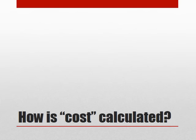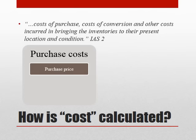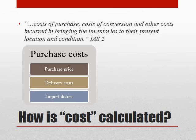Cost is more straightforward and something you'll be much more familiar with. It's the cost of getting that item of stock to its current location and condition. So it's going to include purchase costs — things such as the purchase price itself net of any discounts. We'll also add on the delivery costs, the costs incurred in getting those raw materials or goods for resale to the store or the warehouse or wherever that inventory is held. We'll also include any additional costs that we can't reclaim, such as import duties incurred getting the goods into the country.